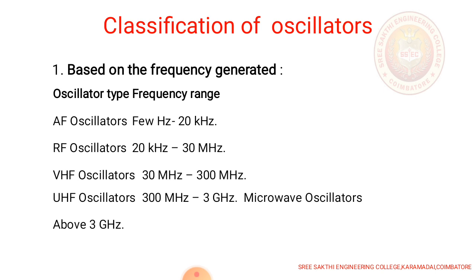Here, audio frequency oscillators will have a frequency from few hertz to 20 kilohertz, and radio frequency will have the frequency range of 20 kilohertz to 30 megahertz. And very high frequency oscillators are in the range of 30 megahertz to 300 megahertz, and ultra high frequency oscillators are in the range of 300 megahertz to 3 gigahertz, in which microwave oscillators are used above 3 gigahertz.